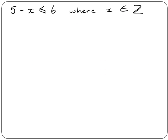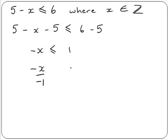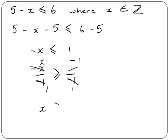Let's try an example. We are asked to solve the inequality 5 minus x is less than or equal to 6, where x is an element of the integers. We start by subtracting 5 from both sides: 5 minus x minus 5 is less than or equal to 6 minus 5, giving us minus x is less than or equal to 1. We now divide both sides by minus 1. Because we are dividing by a negative number, we reverse the inequality sign, so less than or equal to becomes greater than or equal to. We get x is greater than or equal to minus 1.